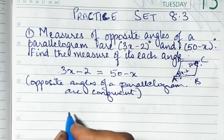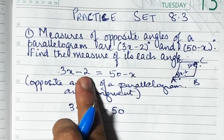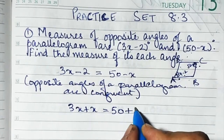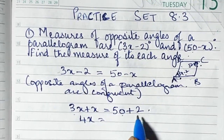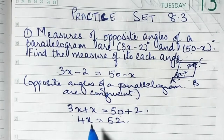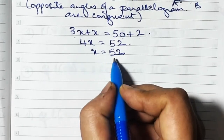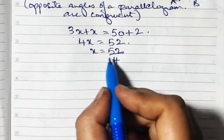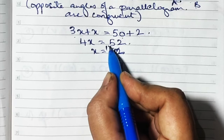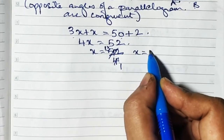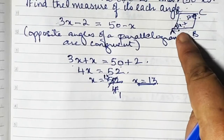Solving: 3x minus 2 equals 50 minus x. Bring the x to the left side — it becomes plus x — so 3x plus x equals 4x. The minus 2 moves to the right side and becomes plus 2, giving 4x equals 52. Therefore x equals 52 divided by 4, which is 13.